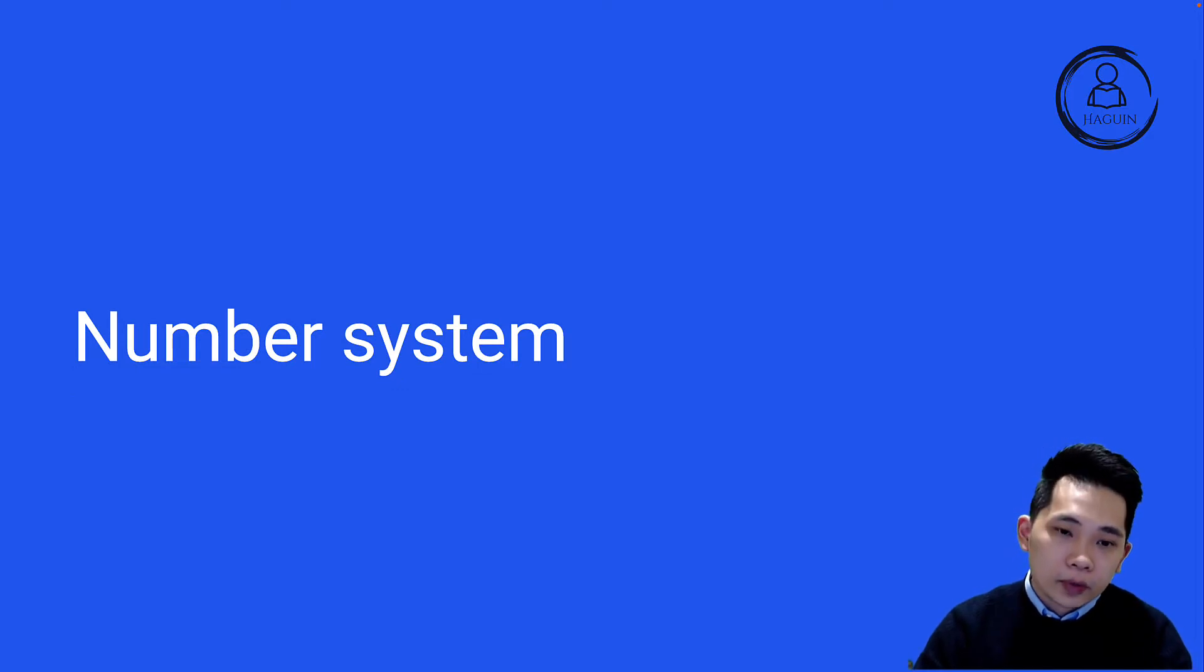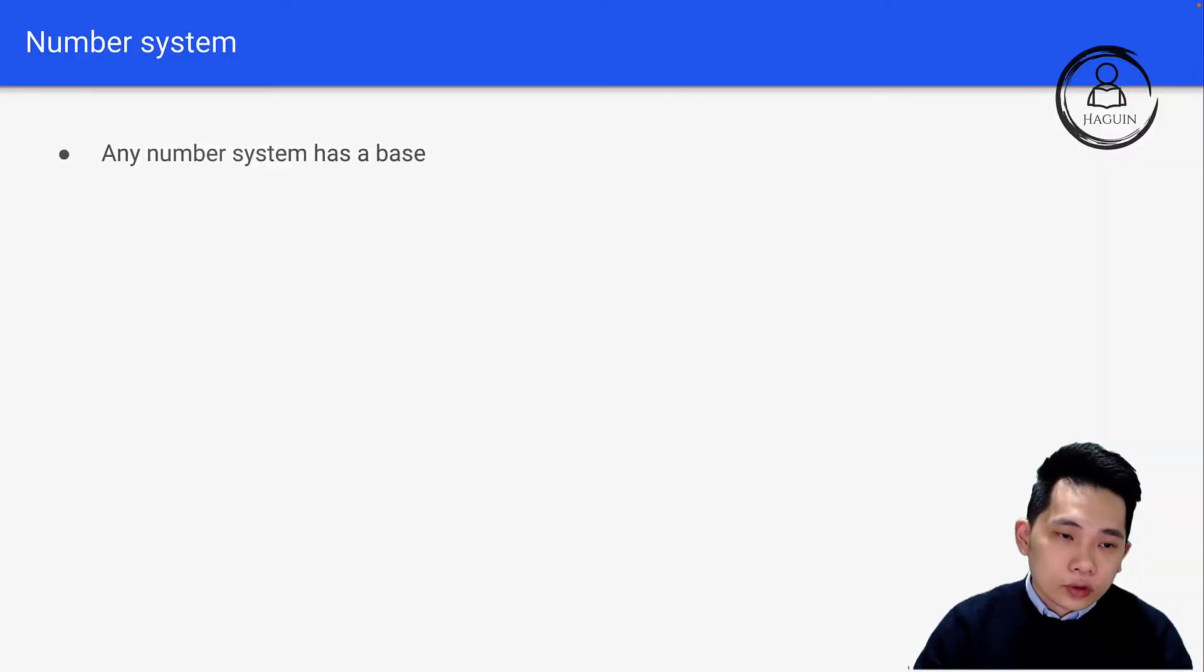First, let's go into number systems. Any number system has a base. Base 10 is denary - the normal numbers we use in daily life like 5, 10, 20, 15. Base 2 is binary, and base 16 is hexadecimal. We'll be going through base 2 and base 16 in this lecture.